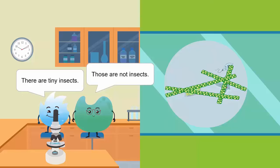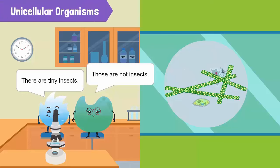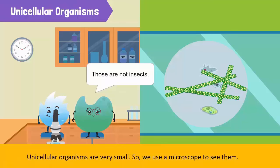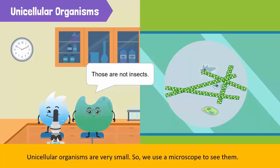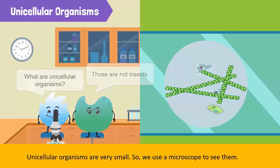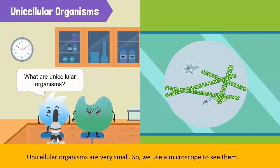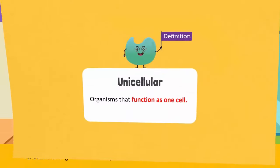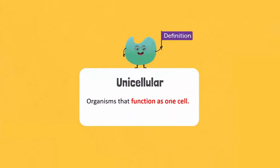They are unicellular organisms. We couldn't see them before because a single cell is impossible to see with the naked eye, which is why we are using this microscope. So what are unicellular organisms? Organisms that function as one cell are called unicellular organisms.